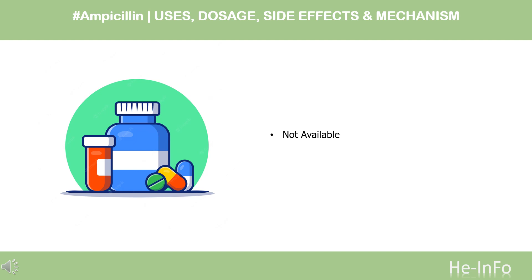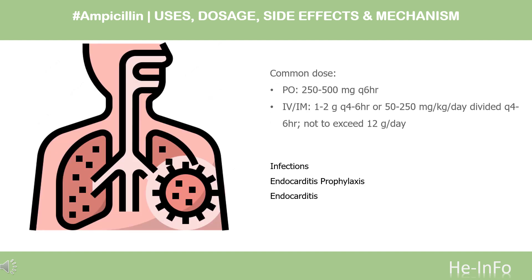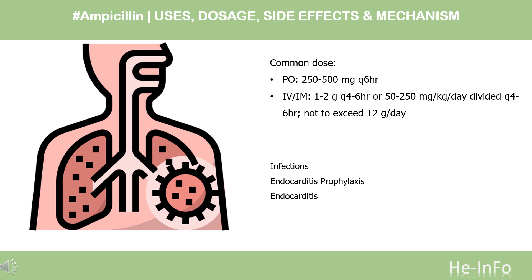General dosing guidelines: PO 250–500 mg Q6HR. For IV/IM: 1–2 g Q4–6HR, or 50–250 mg/kg/day divided Q4–6HR, not to exceed 12 g/day.